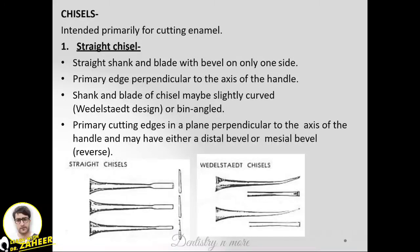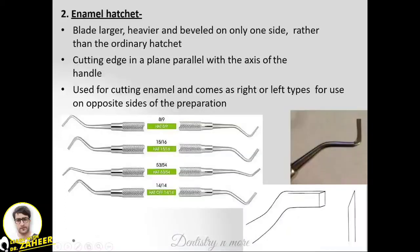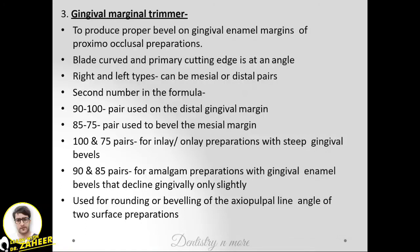Chisels are primarily for cutting enamel. The straight chisel has a straight shank and blade with a bevel on one side, and the primary edge is perpendicular to the axis of the handle. The shank and blade may be slightly curved, with either a distal or mesial bevel. The enamel hatchet has a larger, heavier blade with a bevel on one side; its cutting edge is in a plane parallel with the long axis of the handle, used for cutting enamel, and comes as right or left types for use on opposite sides of the preparation.